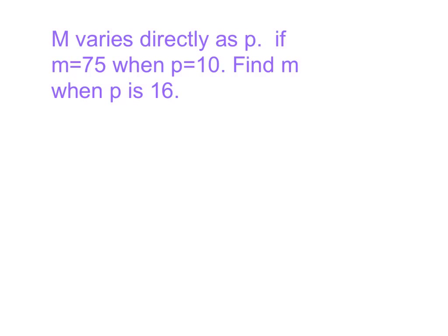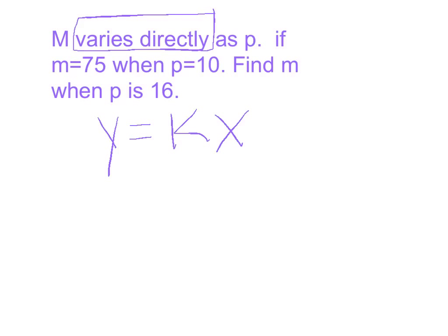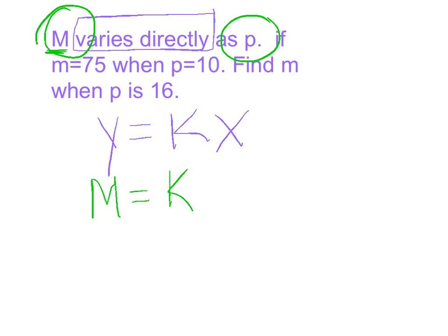Let's dive into our first problem — these are small word problems. M varies directly as P. Our keyword is varies directly, so that triggers in my head to set up the formula Y equals KX. Notice I don't have Y or X in this problem; the letters they tell me to use are M and P. So I'm going to rewrite my direct proportion equation in terms of M and P. Because they start with M, I start with M equals KP. It's very important that we put our direct variation formula in terms of the variables in the problem.